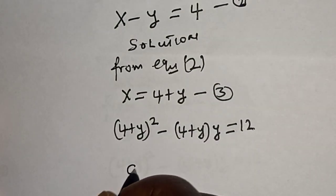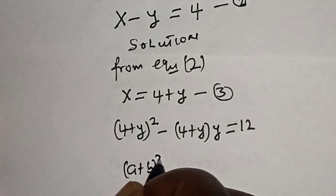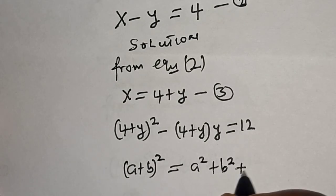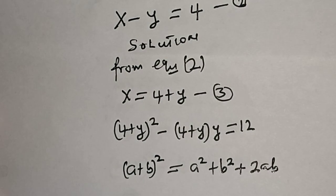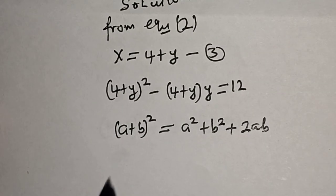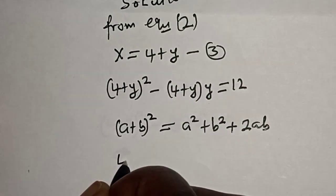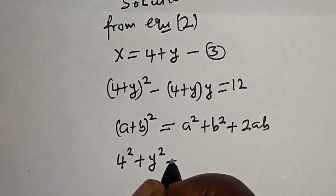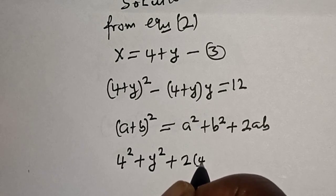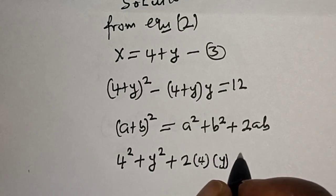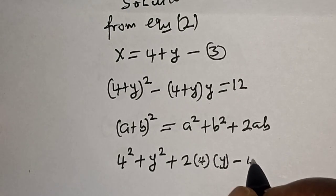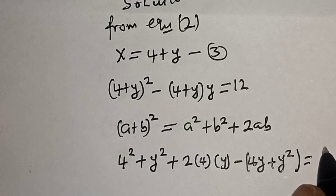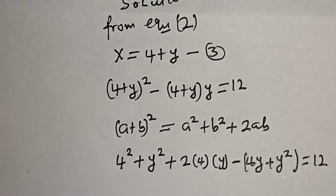Remember this rule: (a plus b) squared is equal to a squared plus b squared plus 2ab. Then this becomes 4 squared plus y squared plus 2 multiplied by 4 multiplied by y, minus (4 plus y) times y, which is equal to 12.